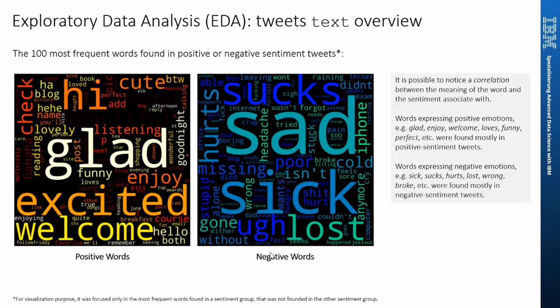Continuing with the EDA, we see here the 100 most frequent words found in positive and negative sentiment tweets. What is interesting here is that we see a correlation between the meaning of the word and the sentiment associated with it. We can see, for example, in the positive word cloud, words like glad, welcome, funny, enjoying. And in the negative word cloud, we see words like sad, sick, headache, lost.